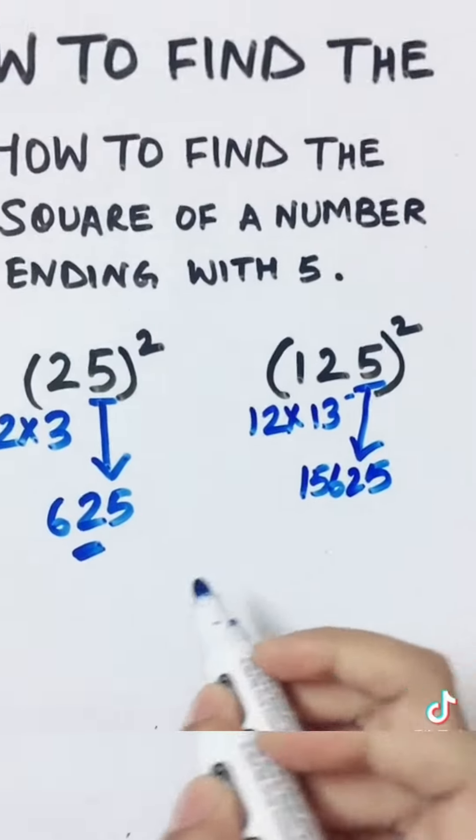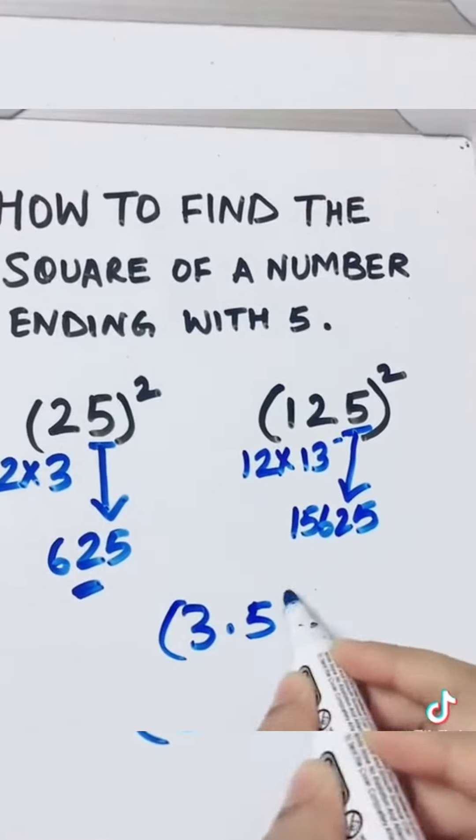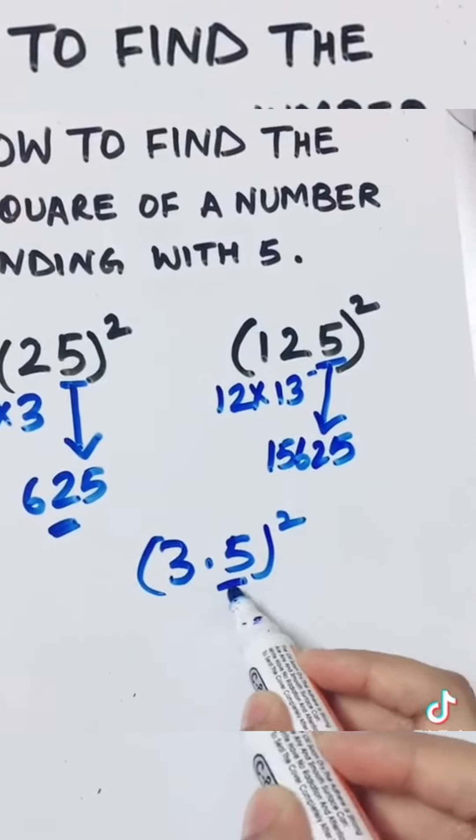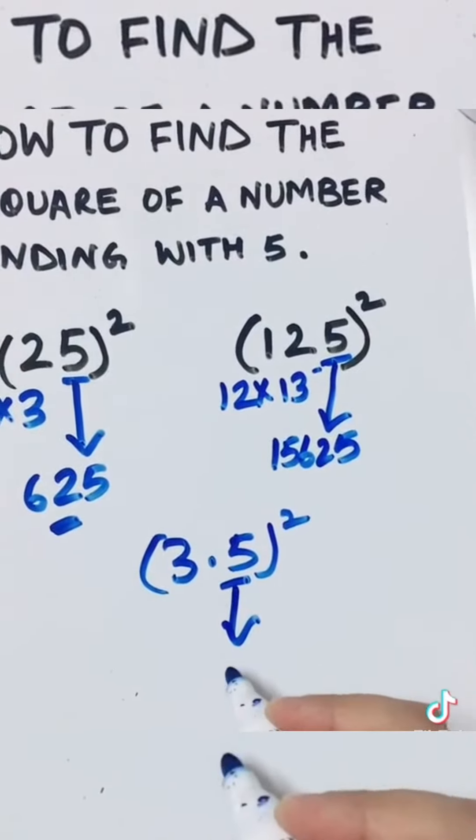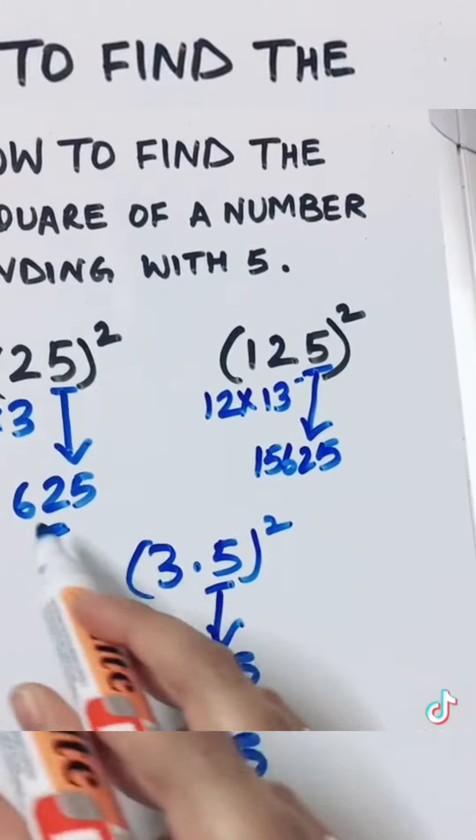Now if suppose you have a number like 3.5 squared, that is also ending with 5. So we have a 5 here. We take the square of 5, that is 25. And then 3, same way like how...